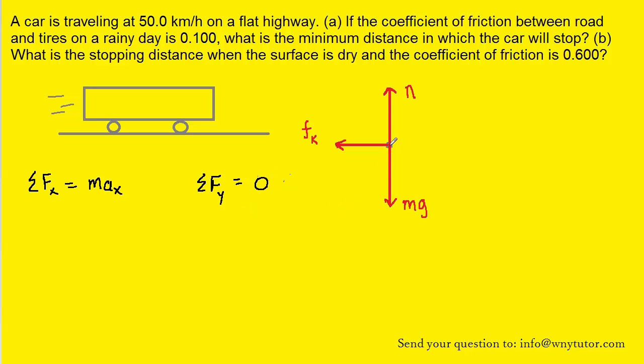In the y-direction there are two forces, the positive normal force, positive because it's pointing upward, and the negative gravitational force, negative because it's pointing downward. We can fill those in to the sum of the forces in the y-direction. And then if we add mg to both sides of this equation, we see that the normal force is equal to the gravitational force mg.